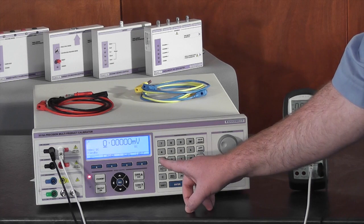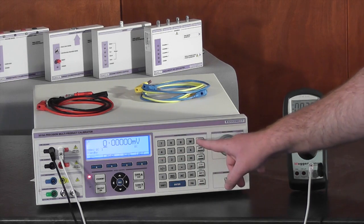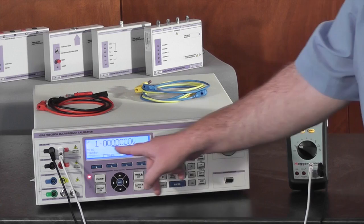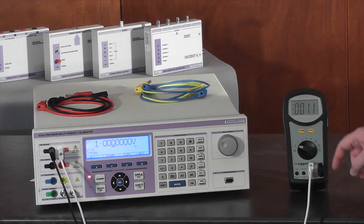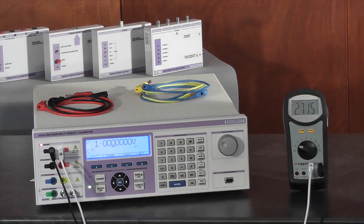To enter 1 volt on the calibrator, simply press the 1 key followed by the volts function key. Pressing enter will make the required value display on the main display. After ensuring your connections are correct, press the output on key.